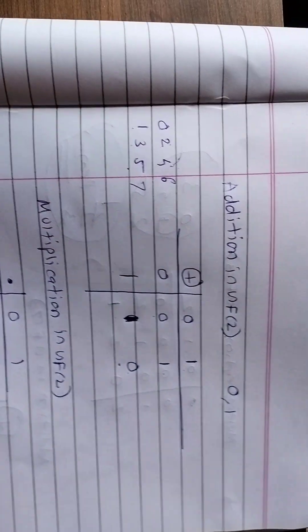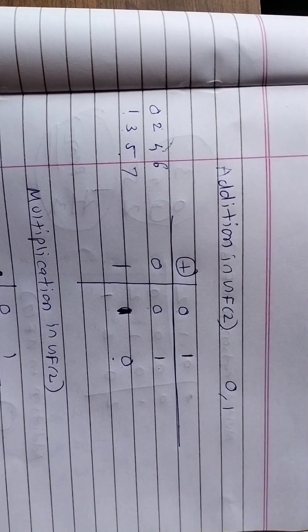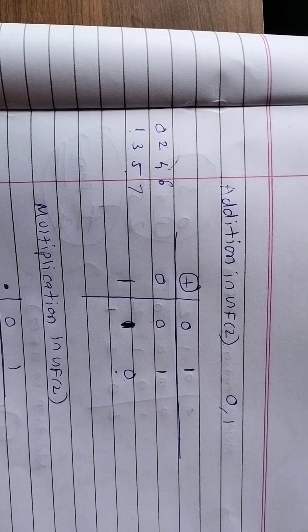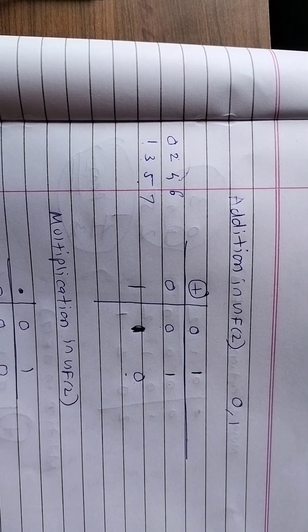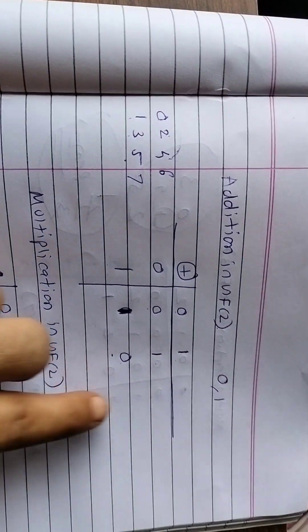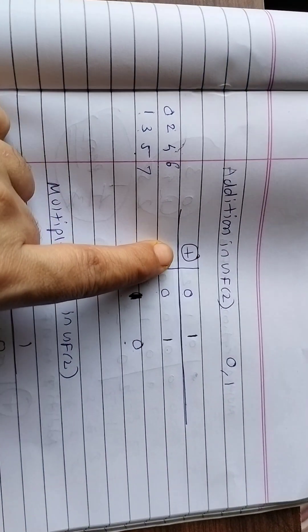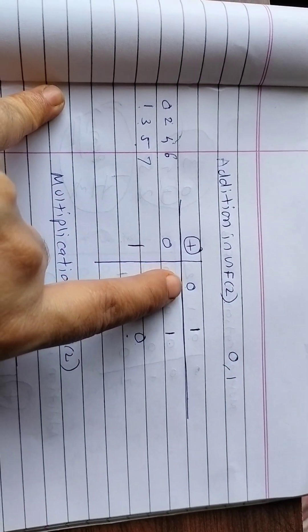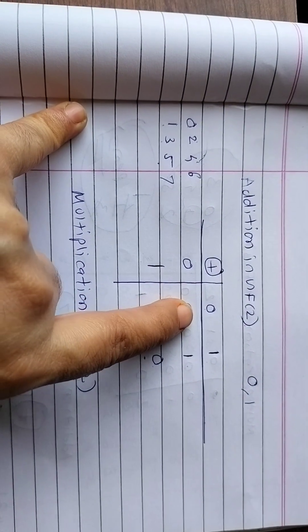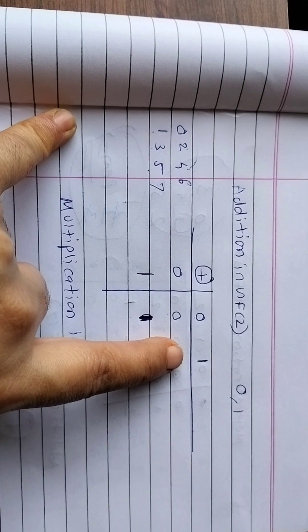In today's video we will see how to find the elements of addition and multiplication tables for different Galois fields. Let us take first Galois field 2. I am going to tell you one trick — actually two tricks — for finding these elements.